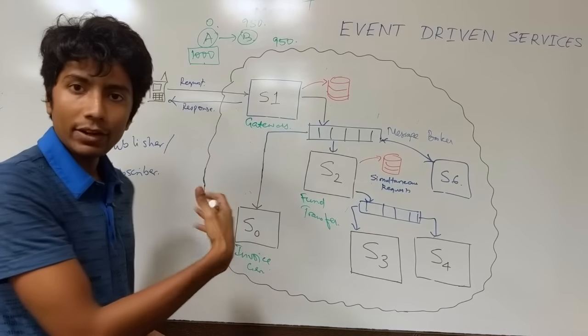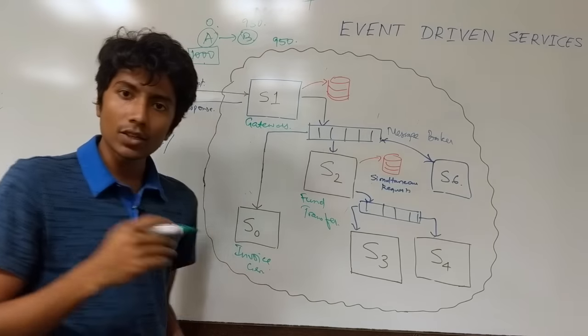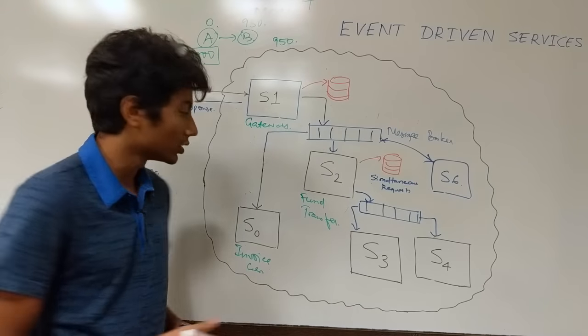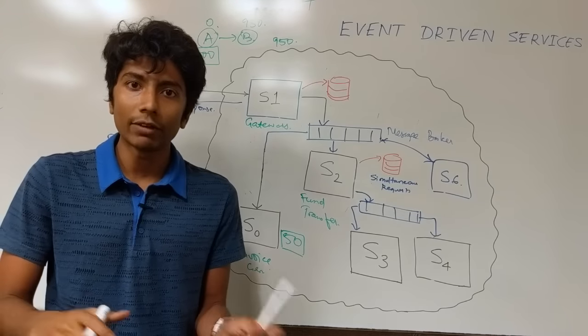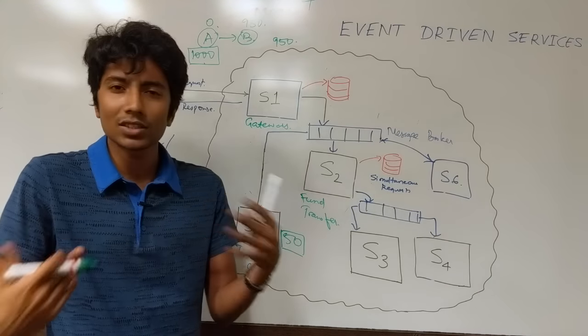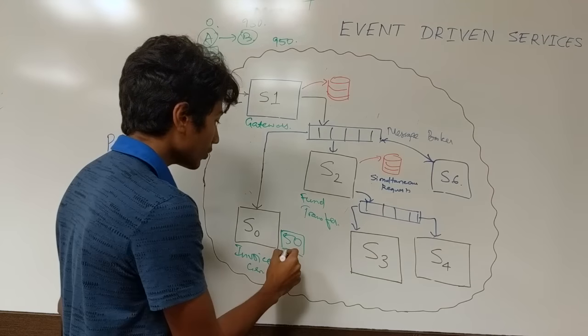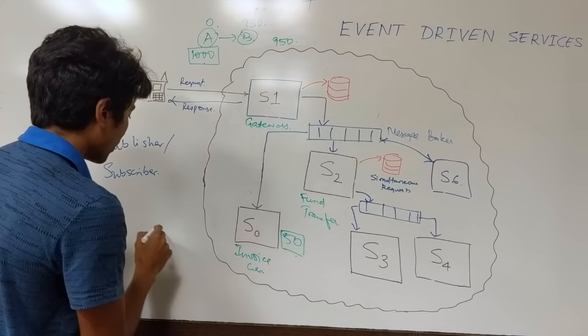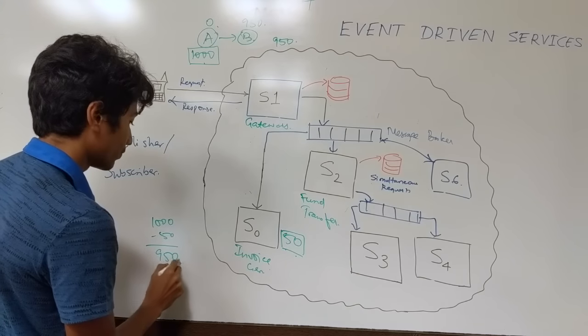But let's say the gateway gets the message, forwards it to S2 and S0. S0 says remove 50 rupees from the account because that's my commission and sends an email to the client saying that you know what, we have 950 rupees in your account. Or rather it just sends an email saying that this is the transaction amount that you asked for. So 50 rupees deduction that makes 1000 minus 50, 950. This is the current amount in the account.